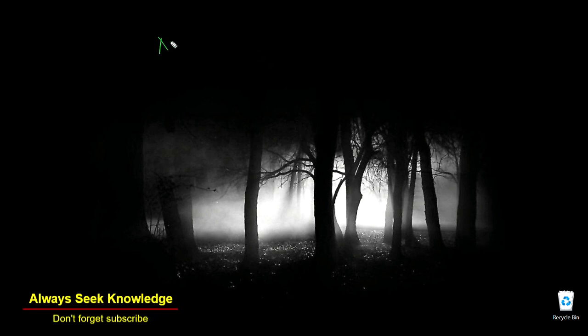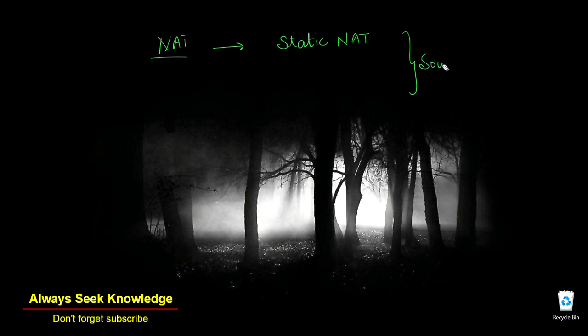Meanwhile, today we are focusing on the NAT part. We decided to take a lab session on NAT — static NAT, dynamic NAT, and PAT. These are basically part of our source NAT, where the source IP address is being translated. It can be translated in three ways: static NAT, dynamic NAT, and NAT overload — sometimes people also call it PAT.